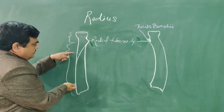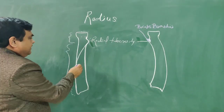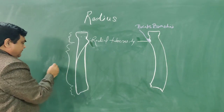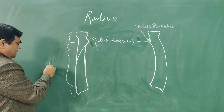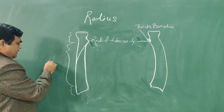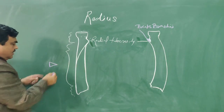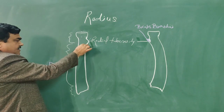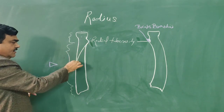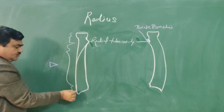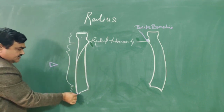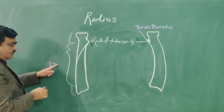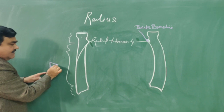This is the shaft. If you cut a cross-section of the shaft, it has three borders. This is the anterior border. It extends from the radial tuberosity to the styloid process. This part is the anterior border.